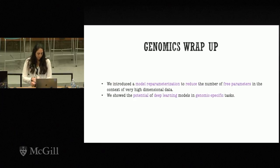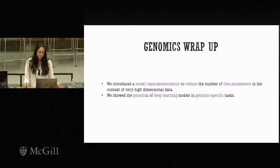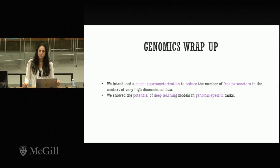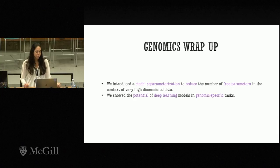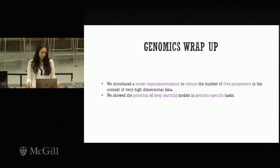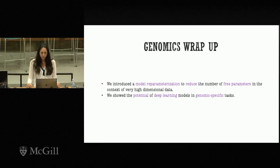To wrap up the genomics part: we introduced the diet network framework, a neural network reparameterization that reduces the number of free parameters in the predictor network. It is specifically designed to handle problems where the number of samples is very low compared to the high dimensionality of the data. Our experiments showed the potential of deep learning models to tackle genomic-specific tasks.